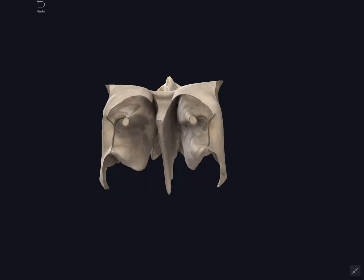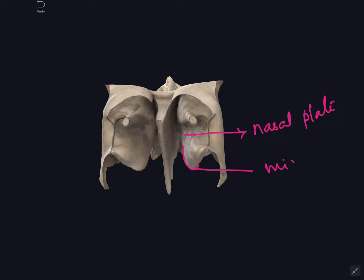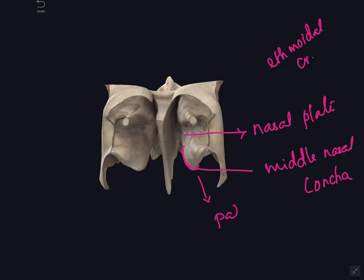The medial surface of the labyrinth presents the nasal plate, which forms part of the lateral wall of the nasal cavity. Below, it forms a curved plate called the middle nasal concha, which is convex medially. Anteriorly it articulates with the ethmoidal crest of the frontal process of the maxilla, and posteriorly with the ethmoidal crest of the perpendicular plate of the palatine bone. The space lateral to the middle concha is called the middle meatus.